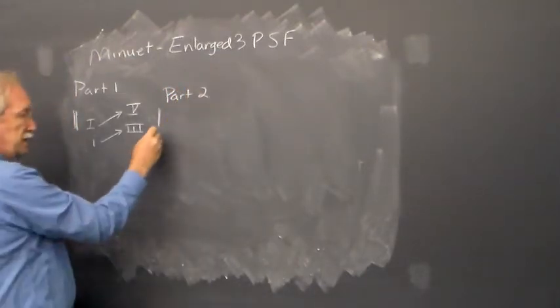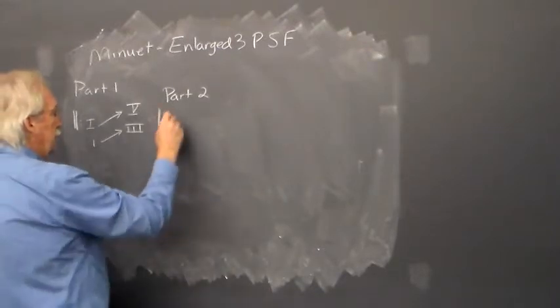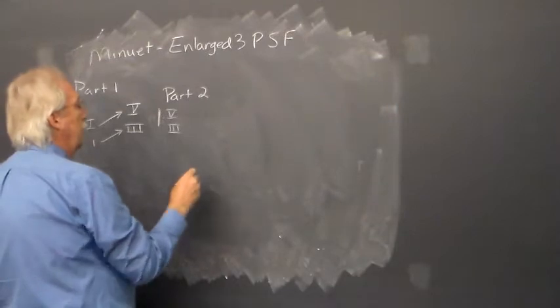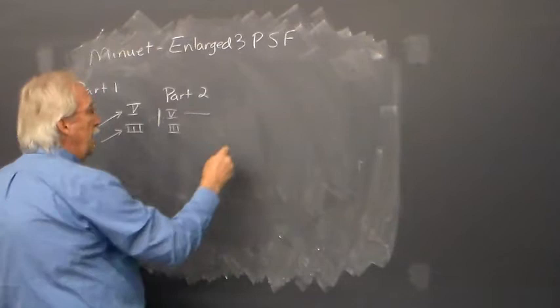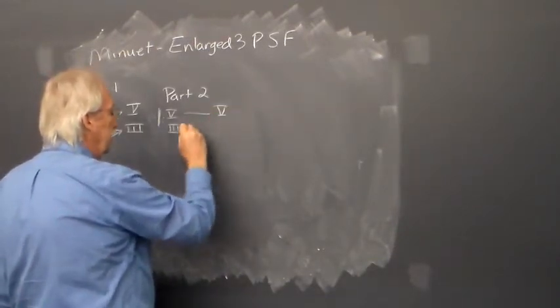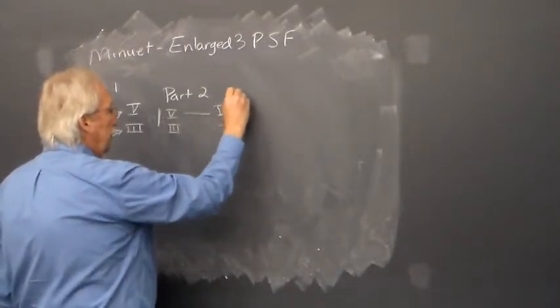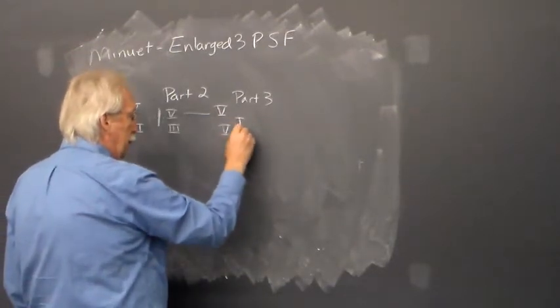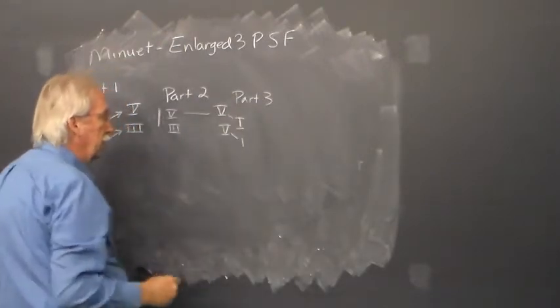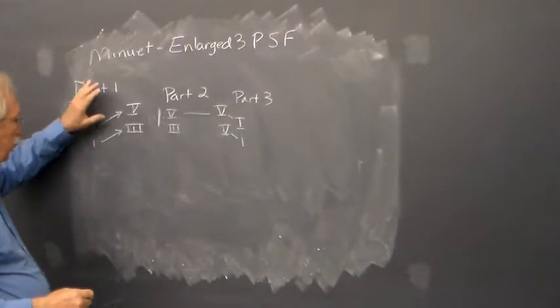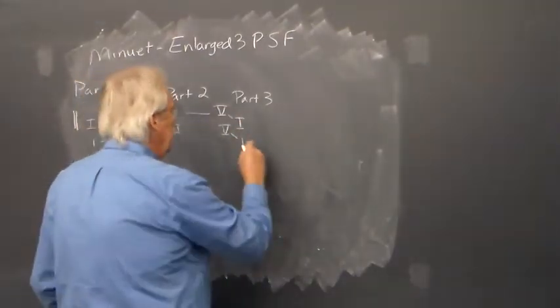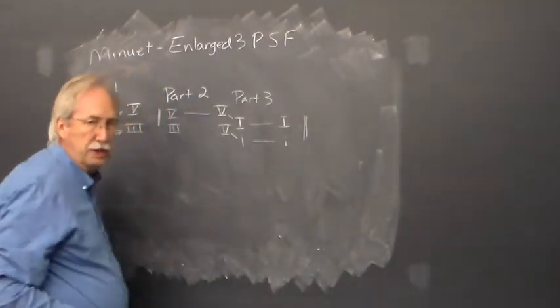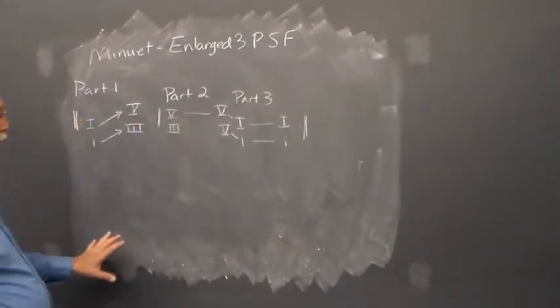Part two begins after the double bars and repeats. Whatever key this has got to at the end of the first part is typically where it picks up at the beginning of part two. This will sequence with a couple of phrases usually. At the very end of part two, whether it's in a minor key or a major key, look for a final arrival on the dominant harmony, which prepares that return of the part one material. Part one and part three share the same material. This will cadence in tonic and then be repeated.